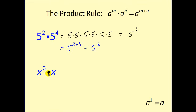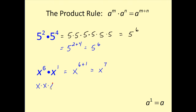Here we have x to the sixth times x. The first thing we have to recognize is that when we have x and there's no exponent listed, that means the exponent will be one — that's actually one of the properties listed on the previous screen. So if we have x to the sixth times x to the first and we use the product rule, we add the exponents to get x to the seventh. If we expand x to the sixth, we'd have six factors of x times an additional factor of x, giving us a total of seven factors of x.